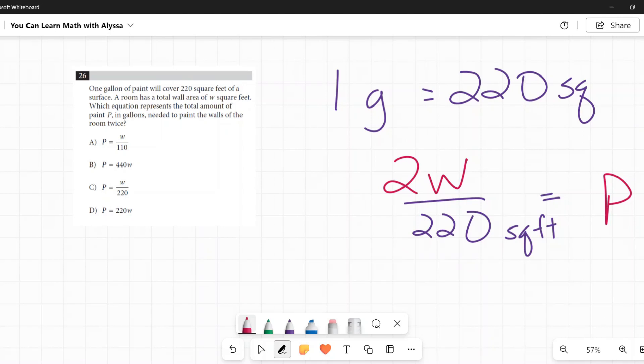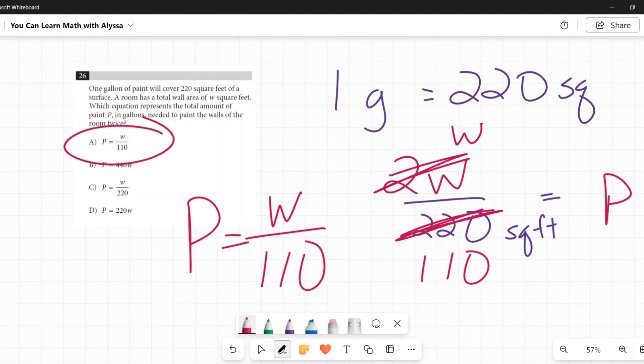We can take this 2 out of both of them. We can divide the top by 2, and that just leaves W. We can divide the bottom by 2, and that leaves 110. So my final equation is P equals W over 110, and that is A.